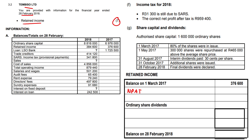Your net profit after tax amount that has been given to you is $959,400. Next is always shares repurchased. Remember, the average price goes to ordinary share capital. The difference between the total amount and the average amount goes into retained income, and the difference indicated there is $465,000 above the average share price. Shares repurchased is an outflow — money going out — so don't forget your brackets.